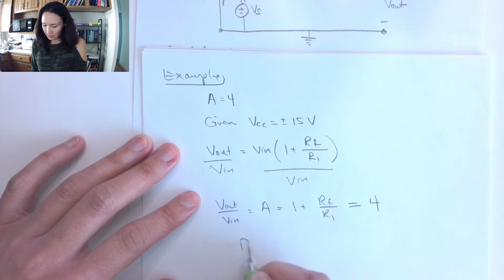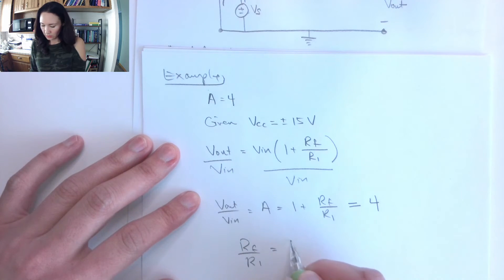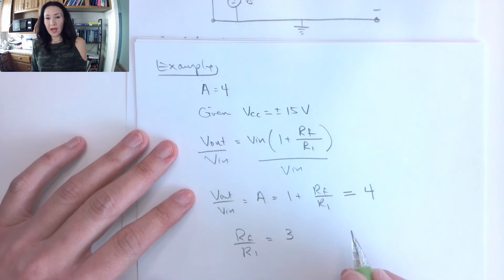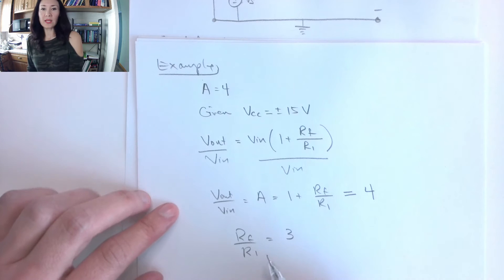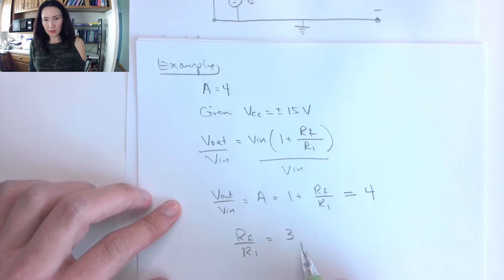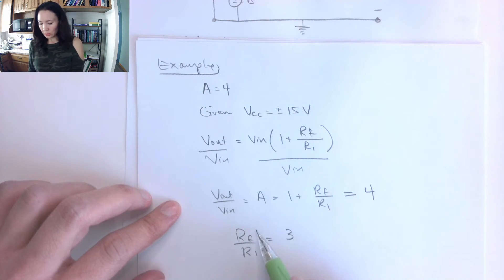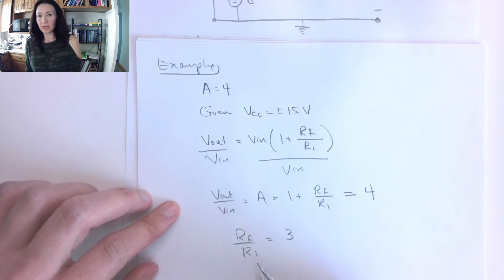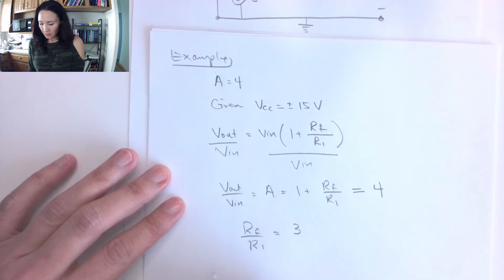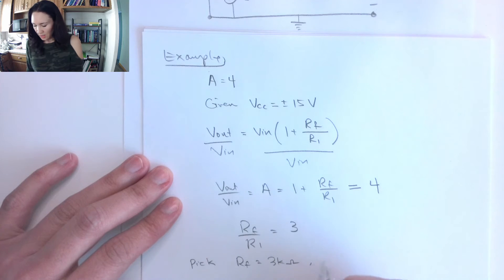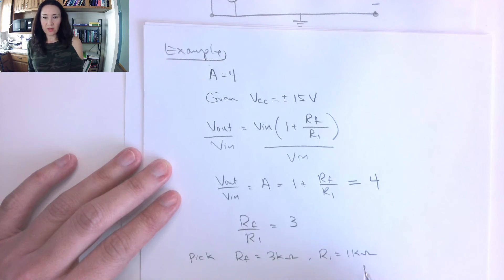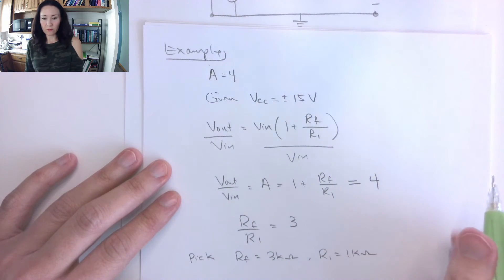That means RF over R1 must equal 3. We need to design a circuit satisfying this. We can pick, for example, RF equals 3k ohms and R1 equals 1k ohm — this satisfies the constraint of a gain of 4.